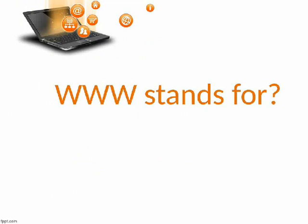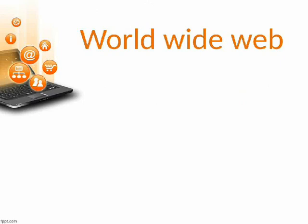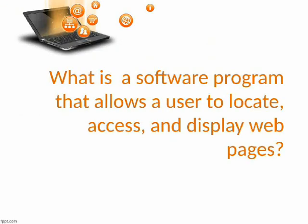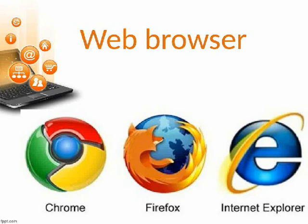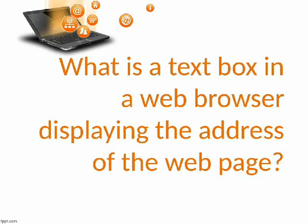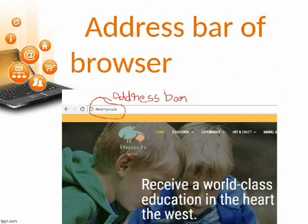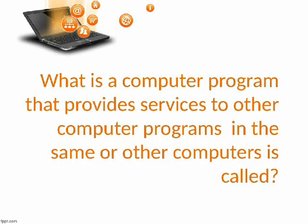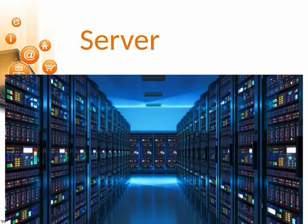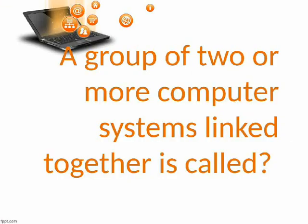www stands for World Wide Web. What is a software program that allows a user to locate, access, and display web pages? Web Browser. What is a text box in a web browser displaying the address of the web page? Address Bar of Browser. What is a computer program that provides services to other computer programs in the same or other computers? Server. A group of two or more computer systems linked together is called Network.